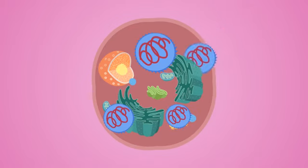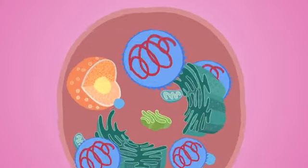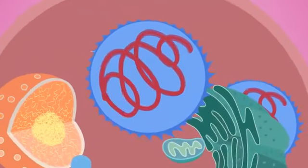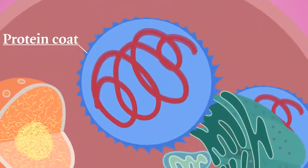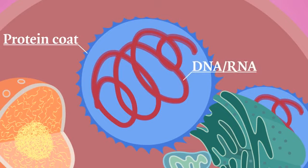And even though they look like a cell, they do not have any organelles or nucleus. A virus is usually covered by a protein coat and contains genetic material in the form of DNA or RNA.